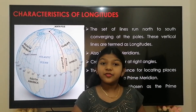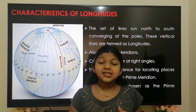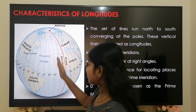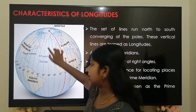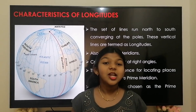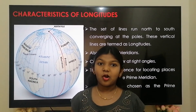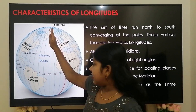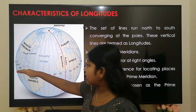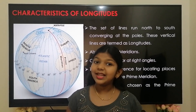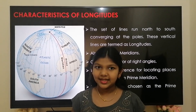Characteristics of Longitude. The set of vertical lines that run from north to south converging at the poles is known as longitude. Longitudes are also known as meridians. The longitude crosses the equator at right angle, or 90 degrees.